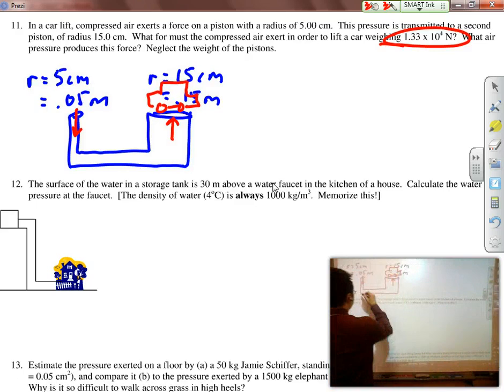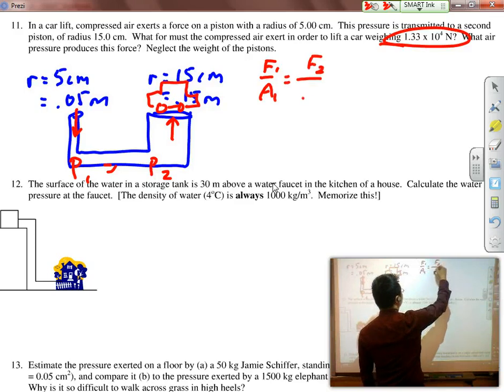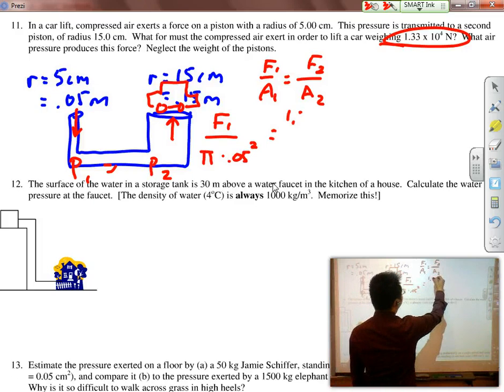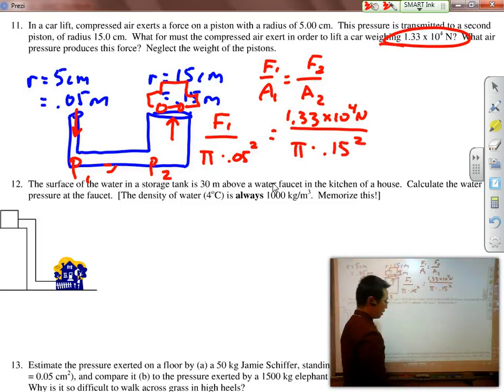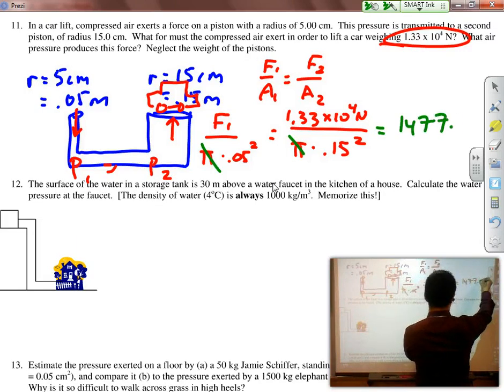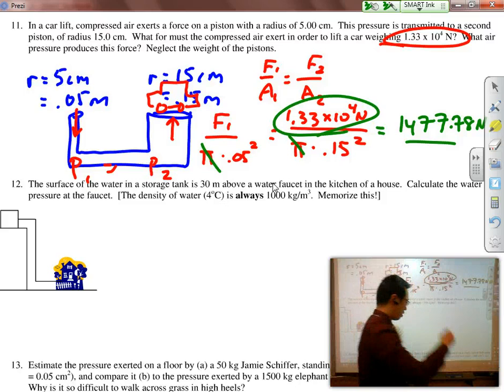The first piston has a radius of 5 centimeters, which is 0.05 meters. And the second one has a radius of 15 centimeters, or 0.15 meters. How much force must it exert to lift a car? As long as we understand that the pressures are equal, P1 equals P2, then F1 over A1 equals F2 over A2. F1 over pi times 0.05 squared equals 1.33 times 10 to the 4th Newton over pi times 0.15 squared. Notice there's a pi on both sides, I'll cross that out. You get 1,477.78 Newtons. A lot less force to lift a heavy car due to the power of hydraulics.